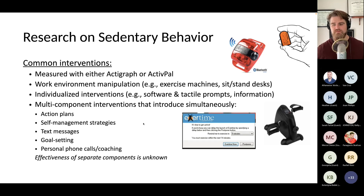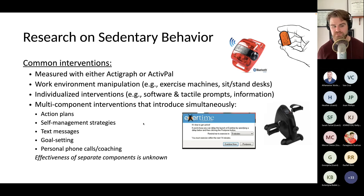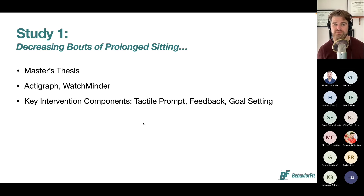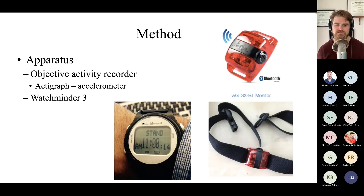The problem with most existing studies is that intervention groups get everything including the kitchen sink while control groups get nothing. Then researchers say it worked — but we need to tease out which components were effective individually, in combination, or together. That was really the theme of my research: we didn't know how effective each component was alone versus combined.